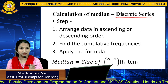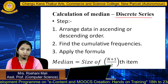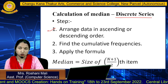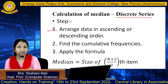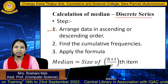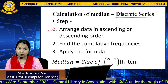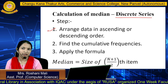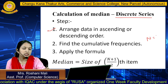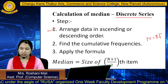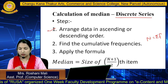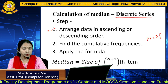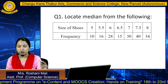Now we'll solve for a discrete series. In a discrete series we have columns x and f, where f is the frequency. The steps are: arrange the data in ascending or descending order, find the cumulative frequency, then apply the formula — median equals size of (n+1)/2 th item. Here n equals the summation of frequency, unlike the individual series where n is the total number of observations.